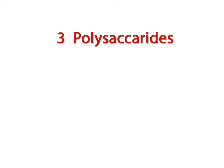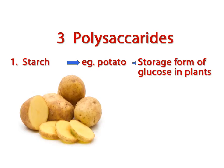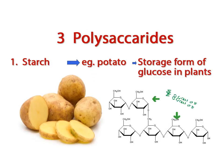The first of the three polysaccharides is starch. If I were to ask you to name a natural starch that we eat, you might say potato. Starch functions as the storage form of glucose in plants, and we can identify it when we see a long chain of monosaccharides bonded together with just a few side chains branching off of it.